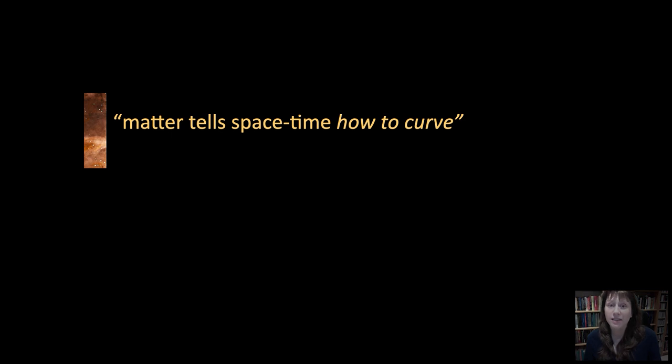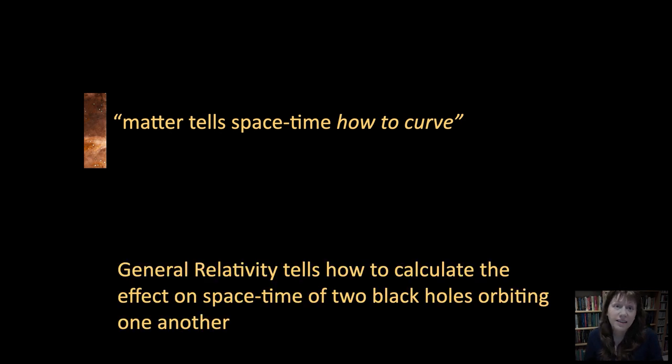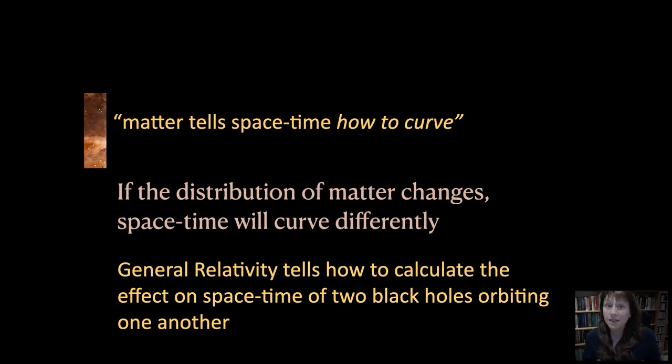Einstein's general theory of relativity enables us to calculate a prediction for what the gravitational waves would look like. And prediction, followed by testing, is a big part of what science is all about. So just how do you go about testing whether space-time is actually rippling or not? We begin by making careful predictions from general relativity about the effect that two black holes orbiting one another and ultimately merging have. What would ripples in space-time actually look like?